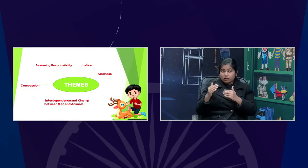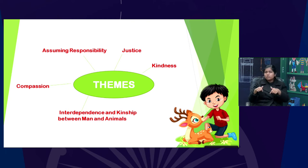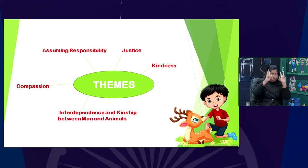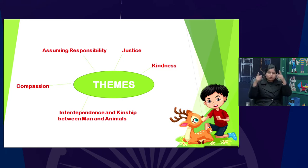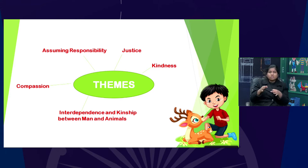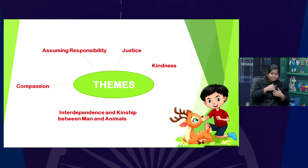This chapter deals with so many human feelings. There are some very strong themes and underlying themes in this lesson. First, assuming responsibility — Jody goes and assumes responsibility of a little animal who is so vulnerable. Then there is a sense of justice: we have killed his mother for our benefit, so justice should be served by taking the fawn in. Of course, there is a sense of kindness and compassion. And then the very old relationship that man has with animals — interdependence and kinship between man and animals — is also there as a theme.